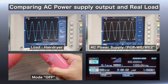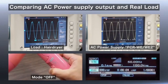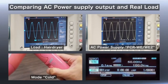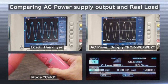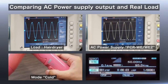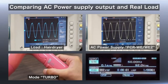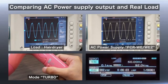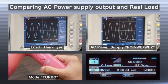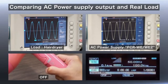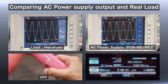In this example, you can see the simulated voltage fluctuation as the hair dryer's mode changes using the sequence mode of the PCR WEWE2 series. The oscilloscope shows almost the same voltage pattern as the commercial line.